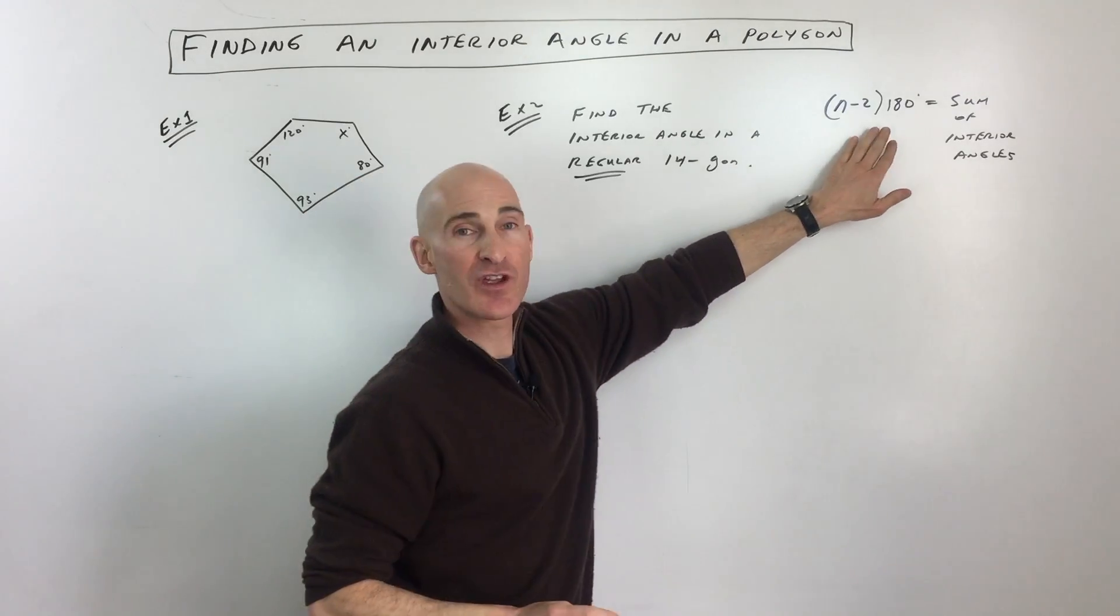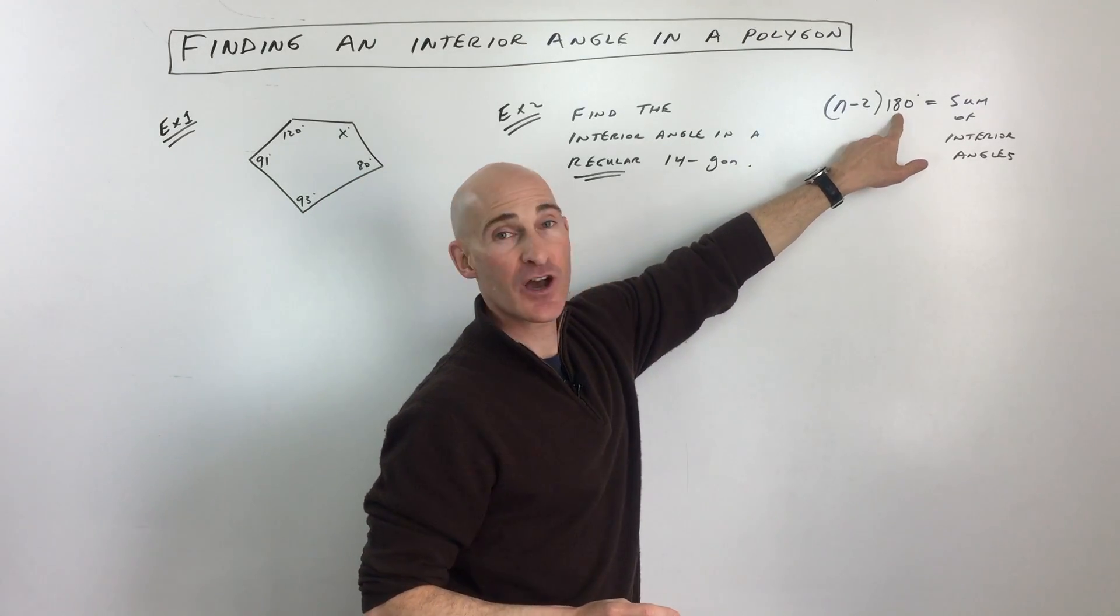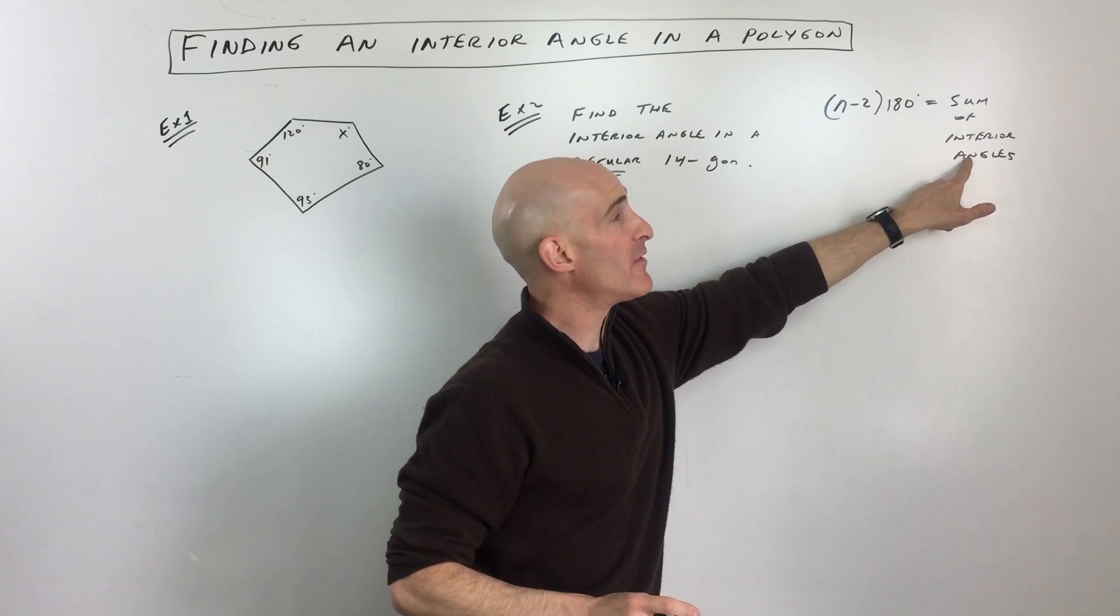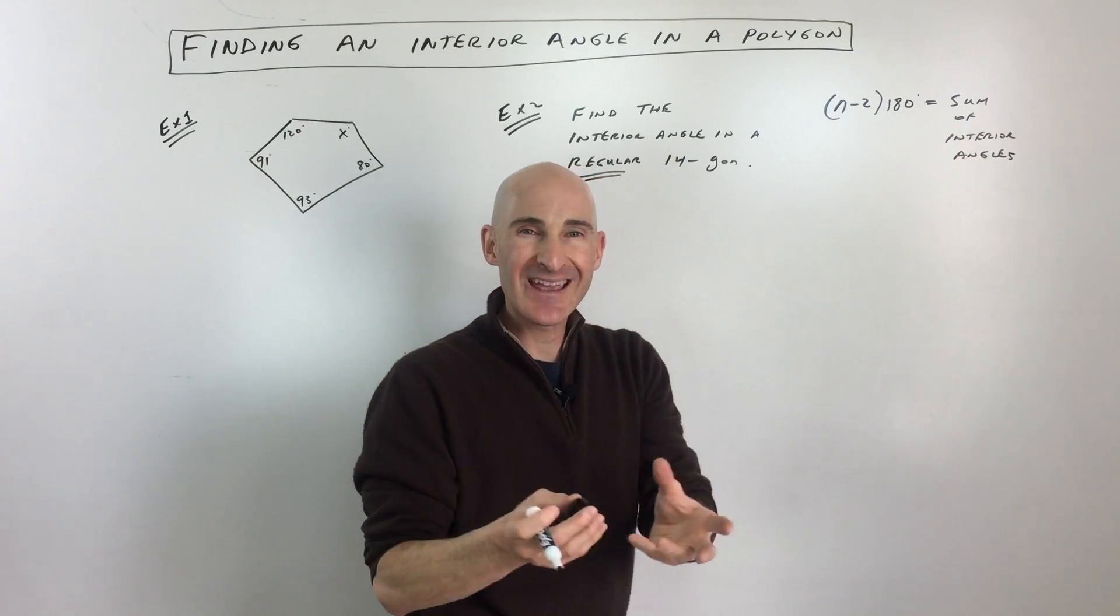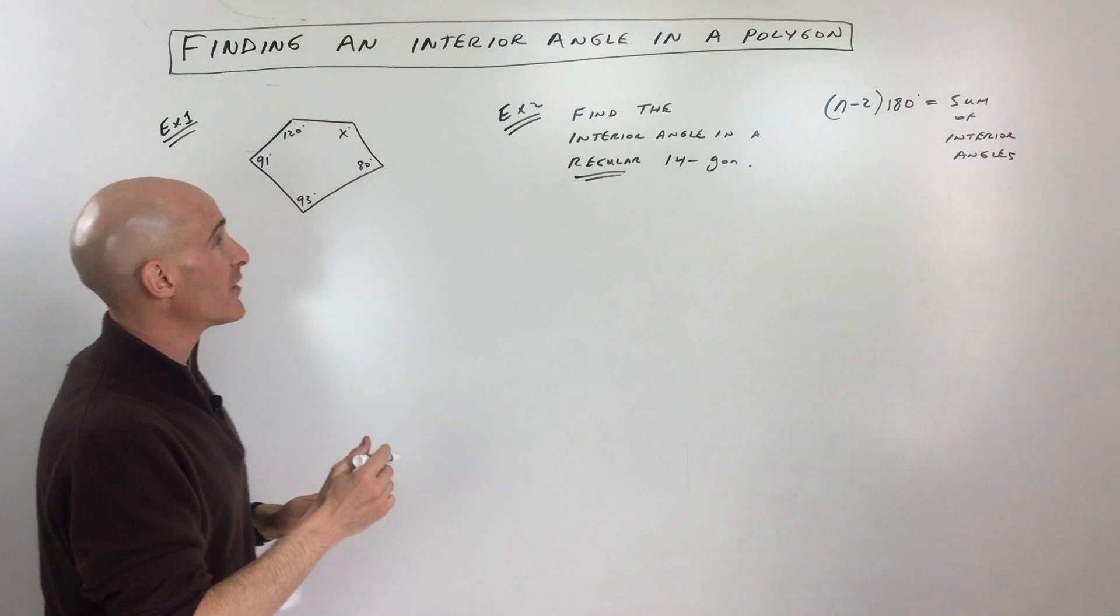The formula that we want to use is this one right over here. It's n minus 2 times 180 equals the sum of the interior angles. So all the inner angles added up, that's going to be that total there.